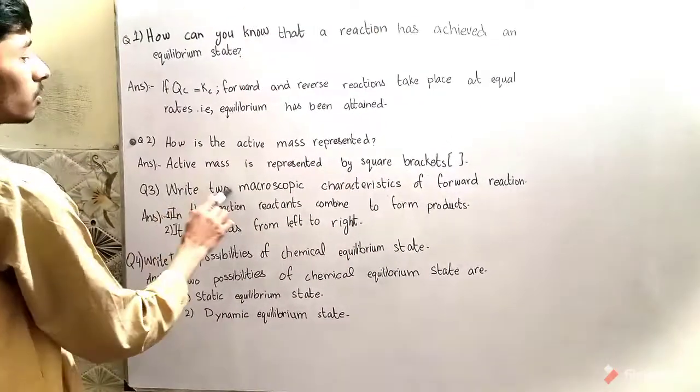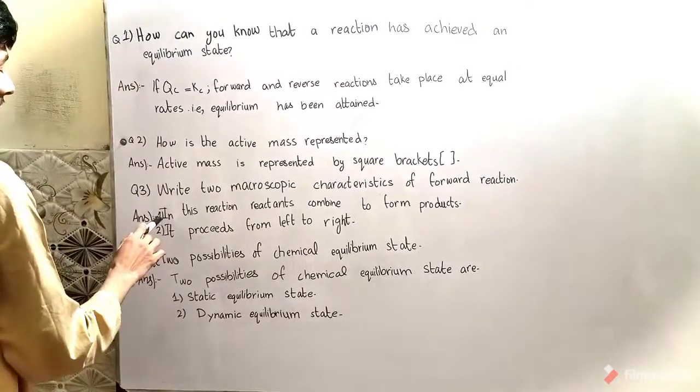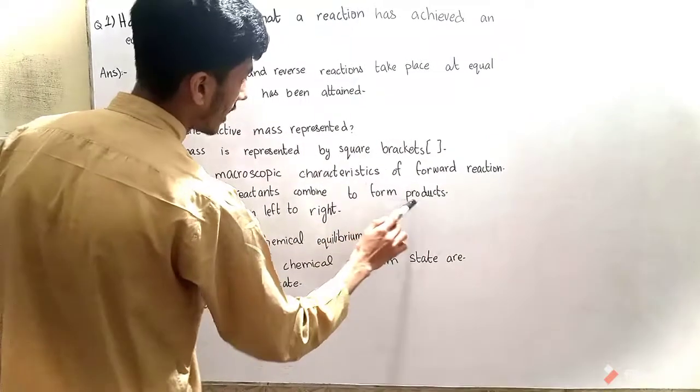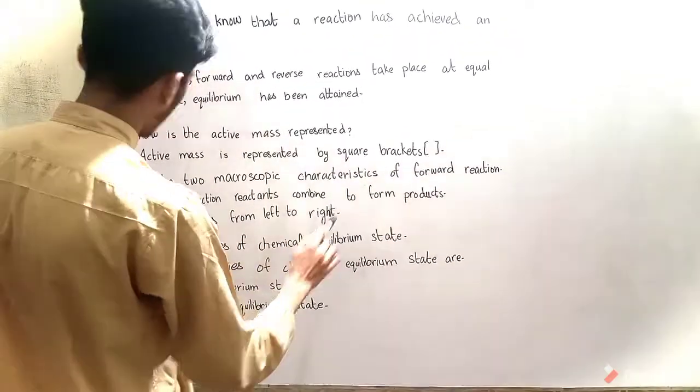Question number three: Write two microscopic characteristics of forward reaction. Answer: Number one, in this reaction reactants tend to combine to form products. It proceeds from left to right.